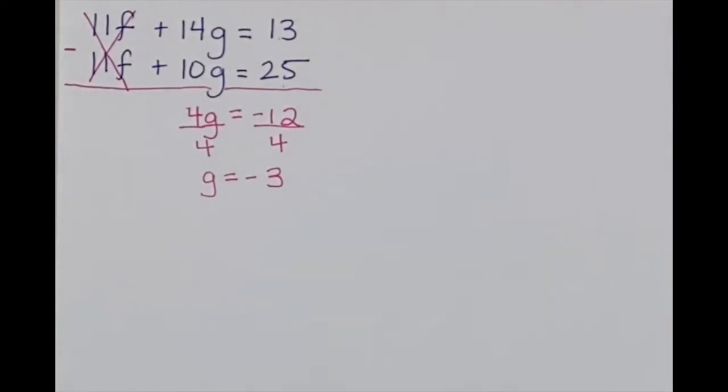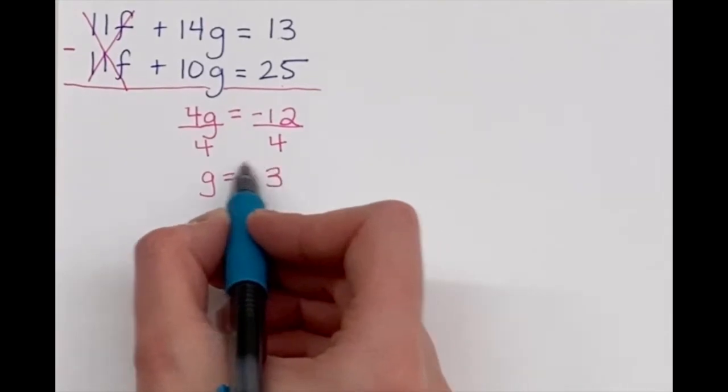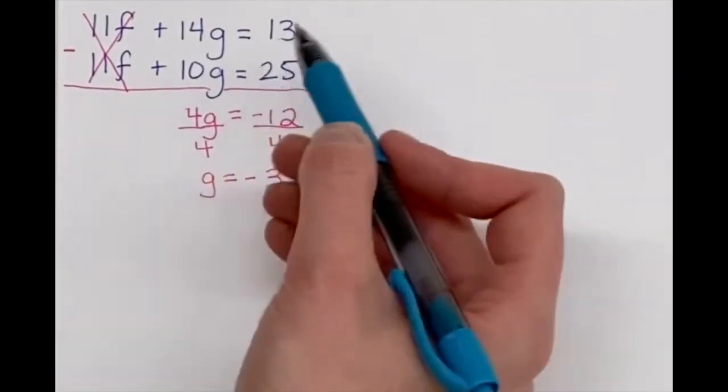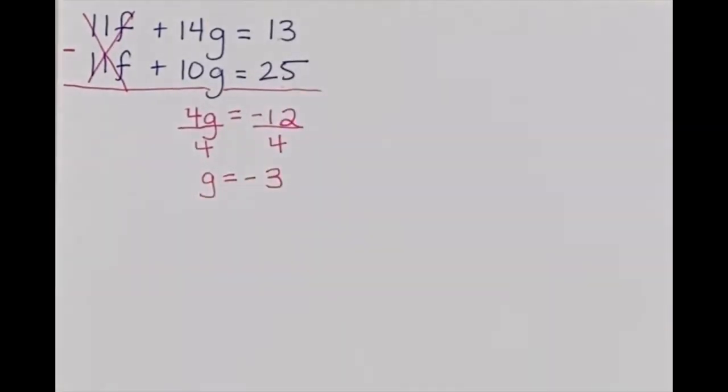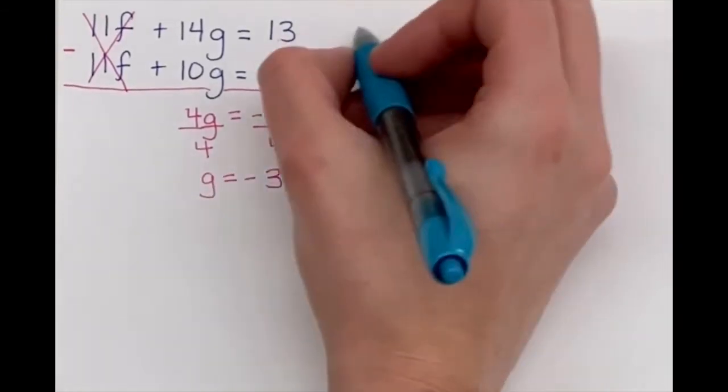Then it's just like substitution on the second half. In order to get our f, we're going to take this g and we get a choice. You can use the top equation or the bottom equation. Just because I like the top one, I'm going to go ahead and take the negative 3 and put it in there.